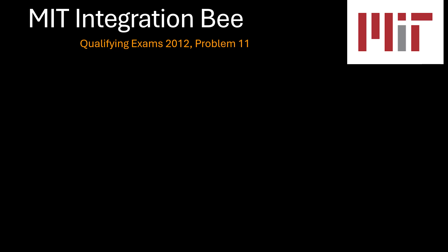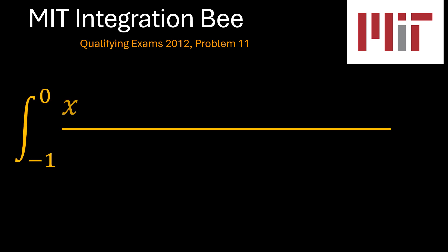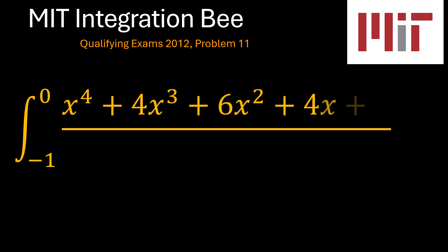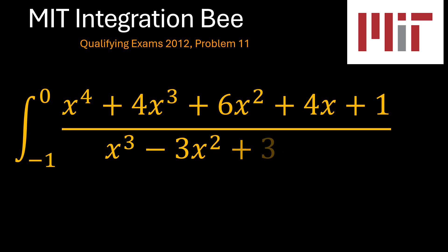Welcome to Everyday Mathematics. This is problem 11 of the 2012 MIT integration big qualifying exams. The definite integral from x equals negative 1 to x equals 0 of x to the power 4 plus 4x cubed plus 6x squared plus 4x plus 1, over x cubed minus 3x squared plus 3x minus 1.